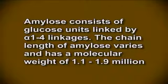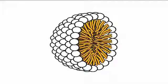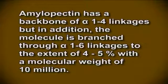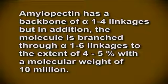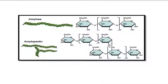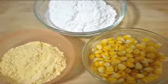The chain length of amylose varies and has a molecular weight of 1.1 to 1.9 million. Amylose is not truly water-soluble but can form micelles. Amylopectin has a backbone of alpha-1,4 linkages but is also branched through alpha-1,6 linkages to the extent of 4 to 5%, with a molecular weight of 10 million. The structure of amylose and amylopectin is shown in Figure 7 on your screen. Starch occurs in granules inside cells which remain intact during most processing. Starch granules are a mixture of amylose and amylopectin arranged radially, and their appearance, size, shape, and behavior under polarized light vary with different sources.